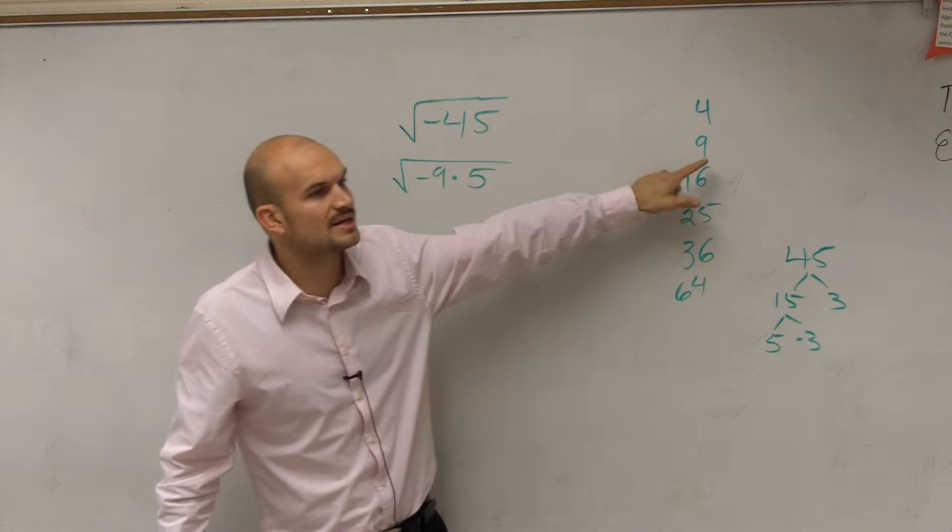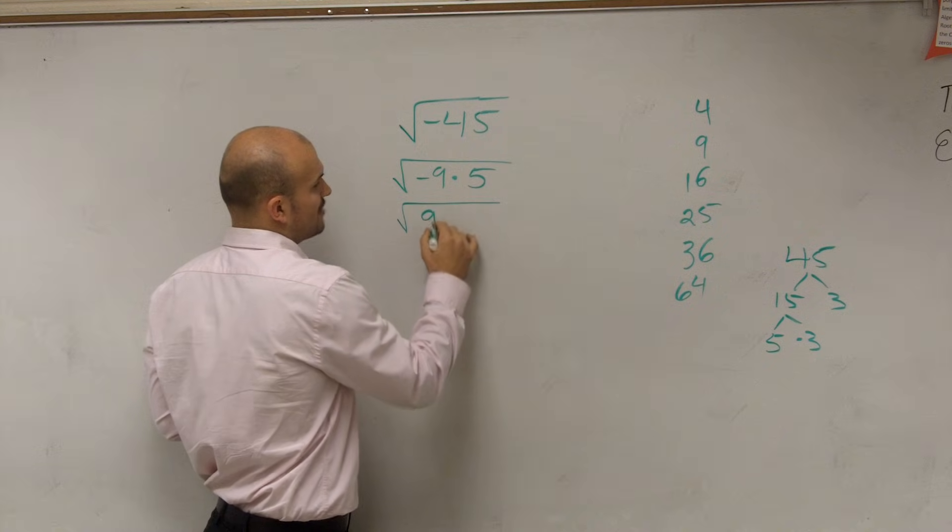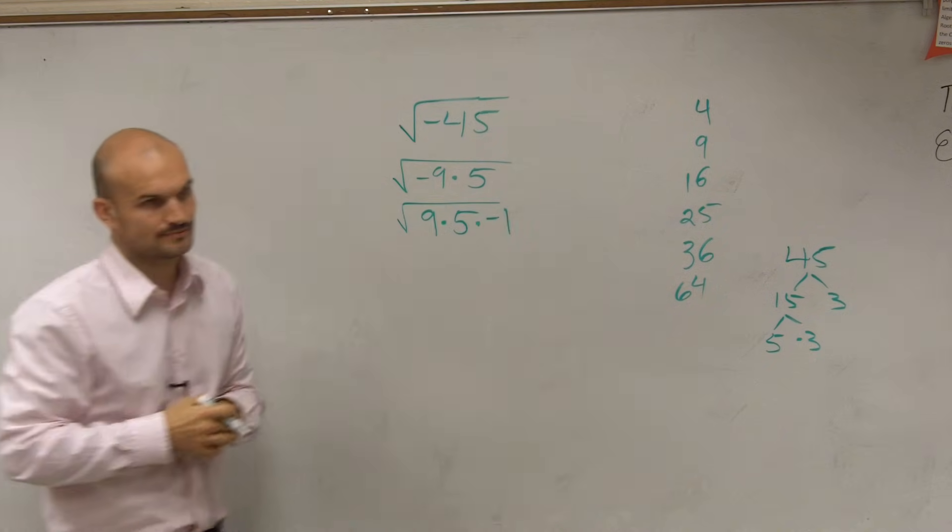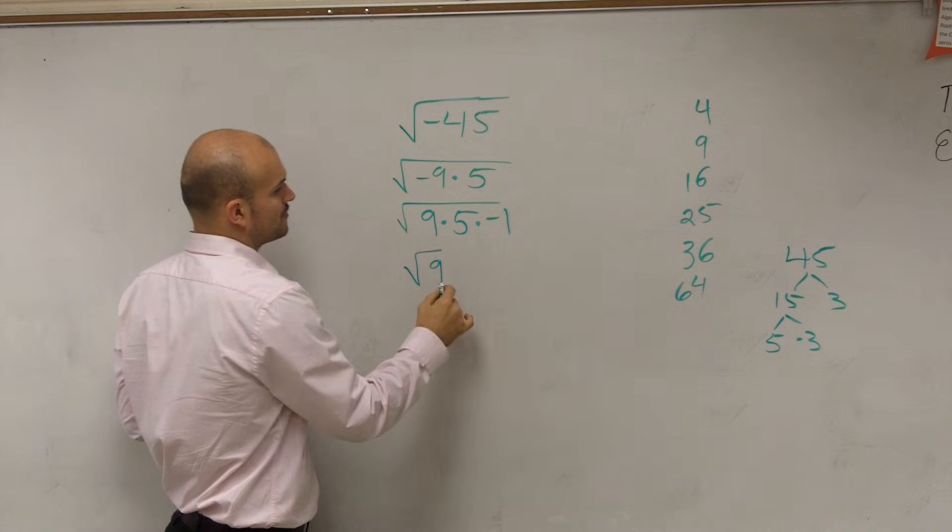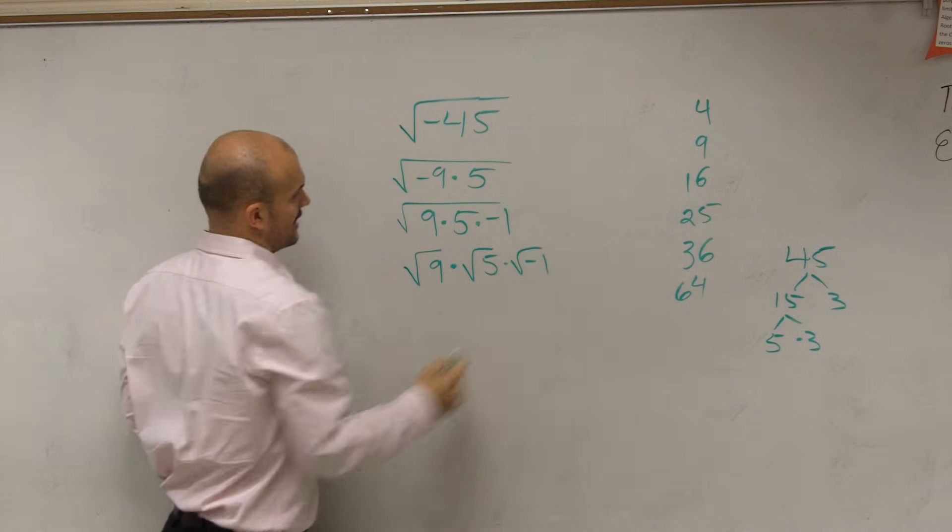Now I'm going to do this one more time because I don't want a negative number there. So I'm going to rewrite it as positive 9 times positive 5 times negative 1. So then when I break this up, I have the square root of 9 times the square root of 5 times the square root of negative 1.